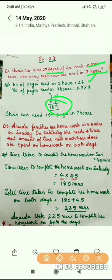Question number 5: Anaida finishes her homework in 45 minutes on Sunday. On Saturday she needs 4 times that amount of time. How much time does she spend on homework on both days? We will find out how much time she is taking on Sunday. She is taking 45 minutes on Sunday. On Saturday, the time taken is 4 times the time taken on Sunday.